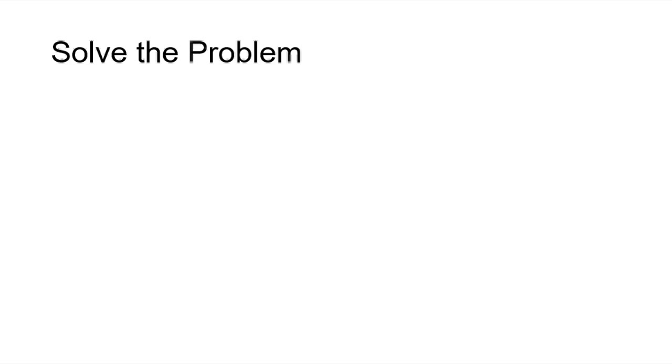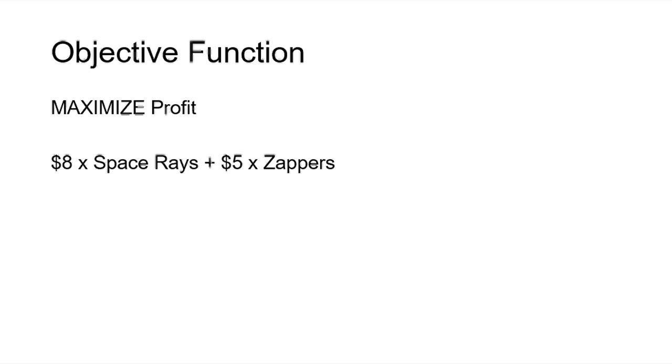Now, based on the reading of the problem and the knowns that we identified, there are two critical variables we need to consider. We want to maximize profit. That means we've got to look at how much profit we're going to make for each of the Space Rays and the Zappers. And since we know that we've got $8 of profit per Space Ray dozen and $5 per Zapper dozen, the objective function then becomes to maximize 8 times the number of Space Rays plus 5 times the number of Zappers.